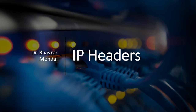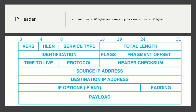Hello everyone. In this video I will discuss about IP headers. In my previous video I had discussed about the TCP/IP suite, where you have seen the IP header. This is how it looks. The length is 32 bits per line, which we call a word, so it is 32-bit words, and these are some mandatory fields.